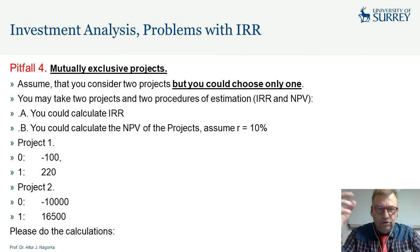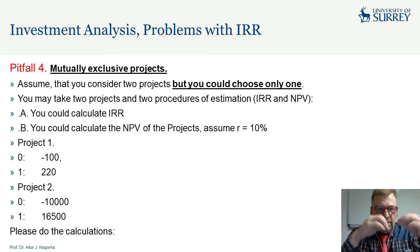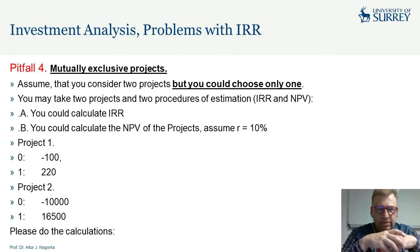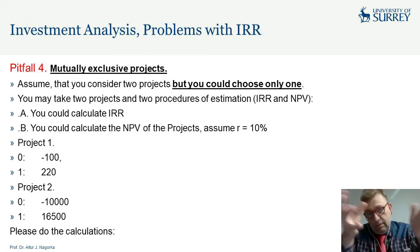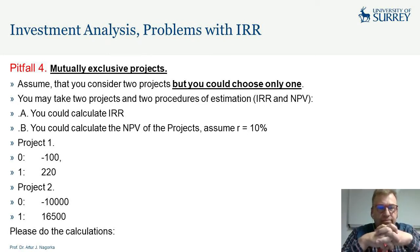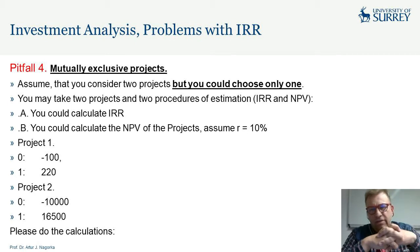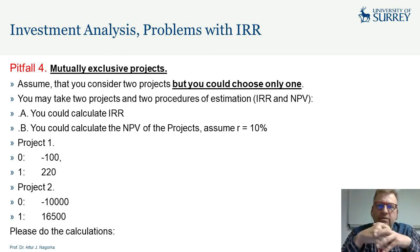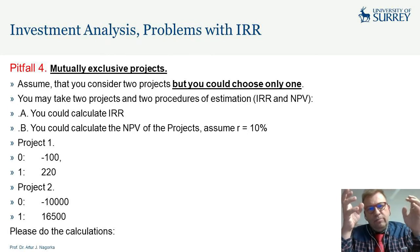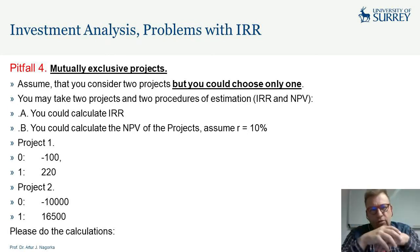Let's look at two specific projects. Project One: investment of 100 in year zero, and in year one we receive 220 — a very nice project. Project Two: investment of 10,000 in year zero, and in year one we receive 16,500.